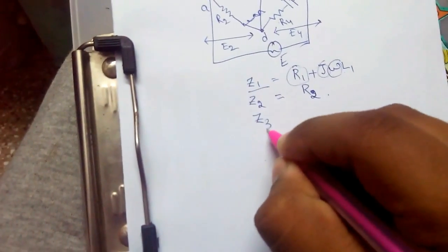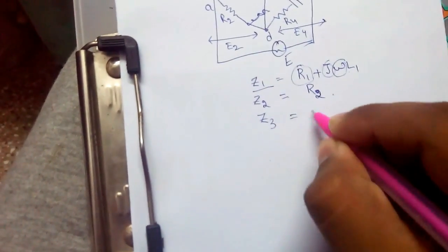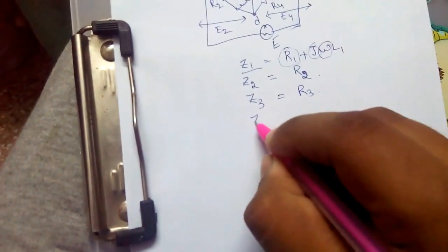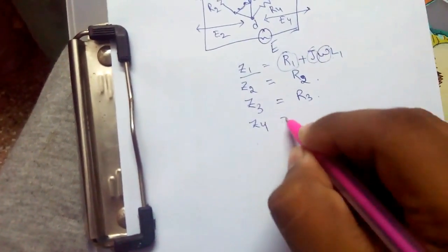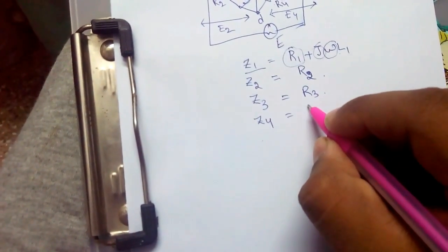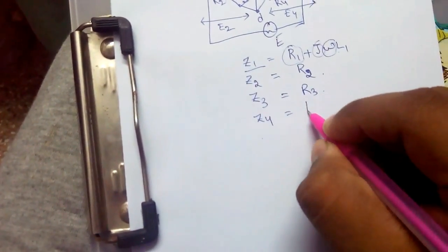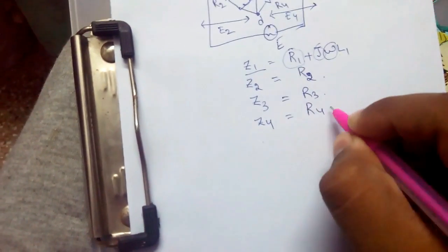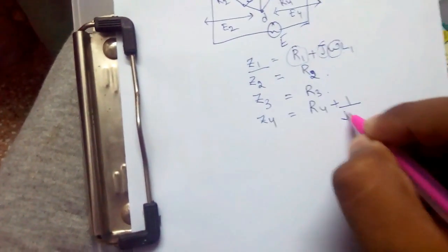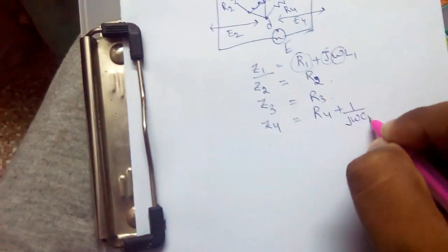Z3 would be equals to R3. Z4 would be equal to R4 plus 1 upon J omega C4.